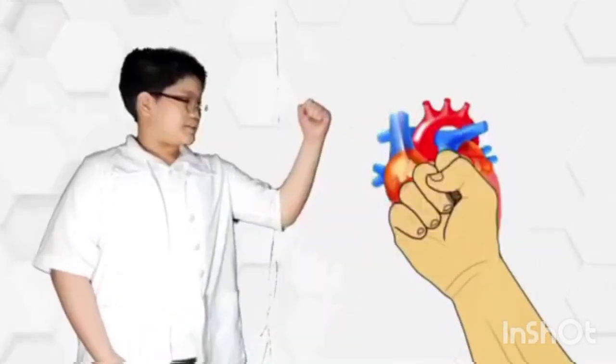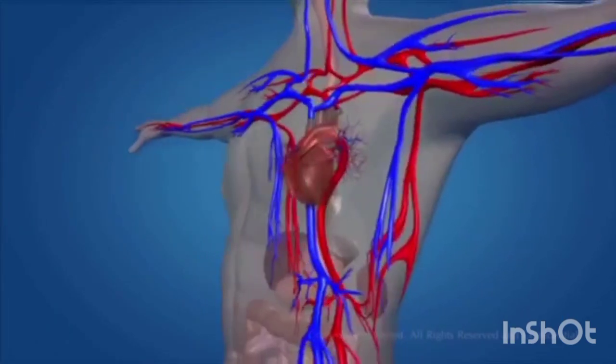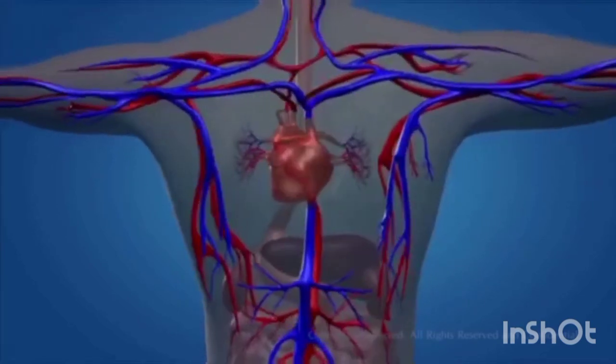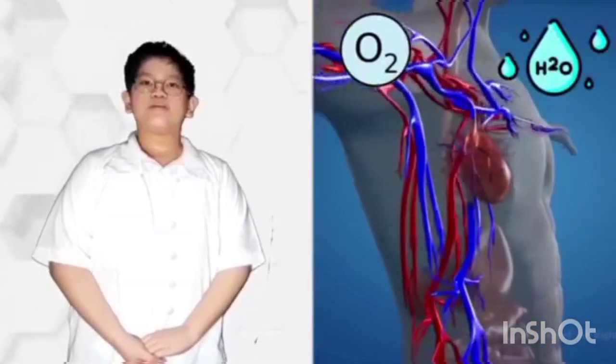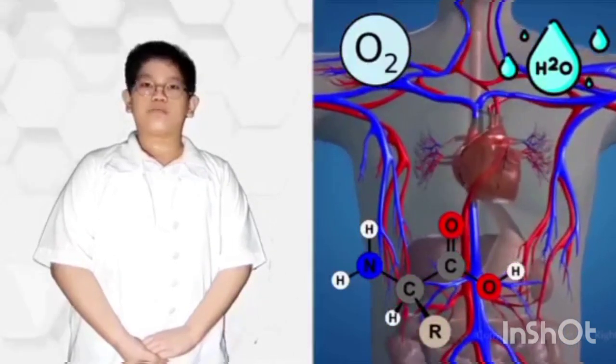The heart is a muscular organ about the size of a fist, located just behind and slightly left of the breastbone. The heart is at the center of your circulatory system, which is a network of blood vessels that delivers blood to all parts of the body. Blood carries oxygen and other important nutrients that all body organs need to stay healthy and work properly.